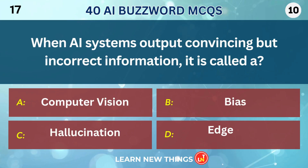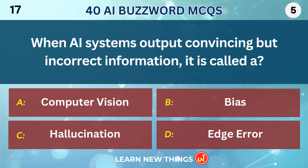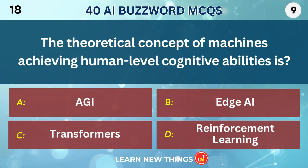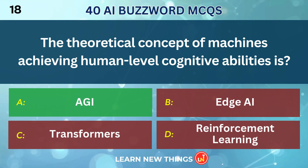When AI systems output convincing but incorrect information, it is called a Hallucination. The theoretical concept of machines achieving human-level cognitive abilities is AGI.